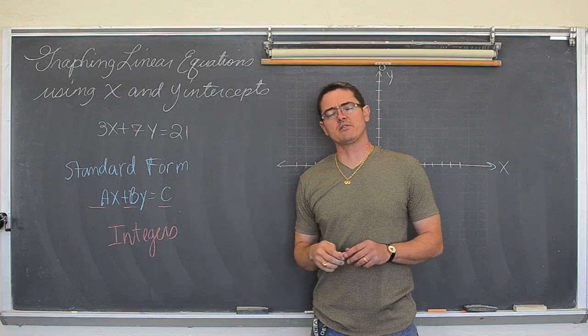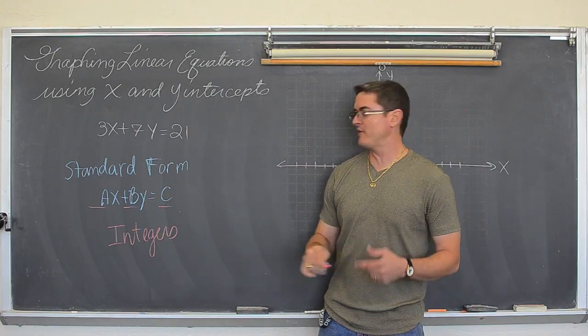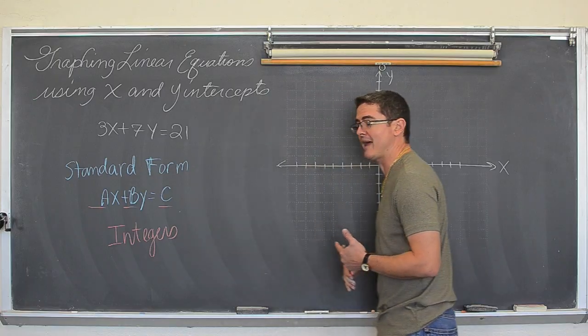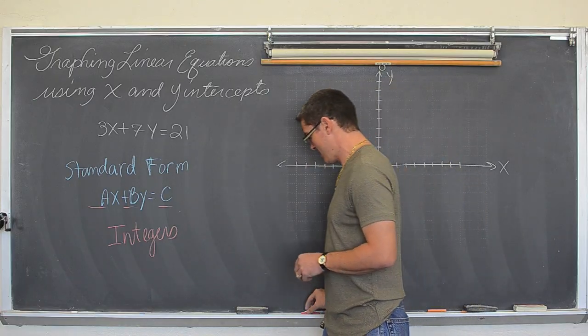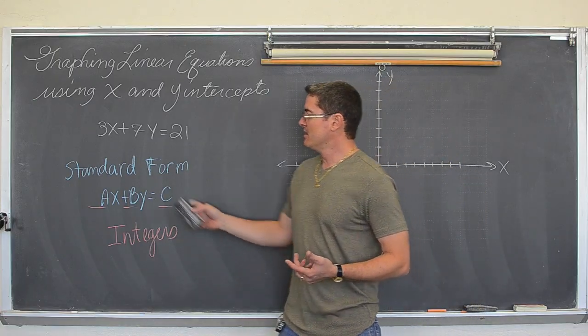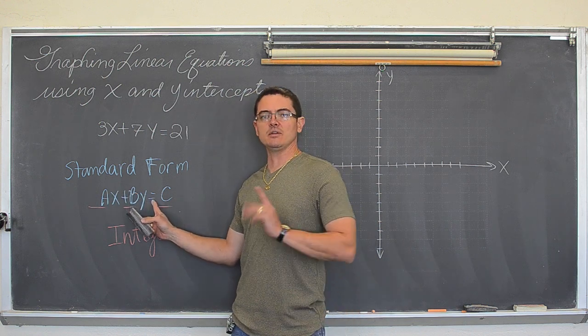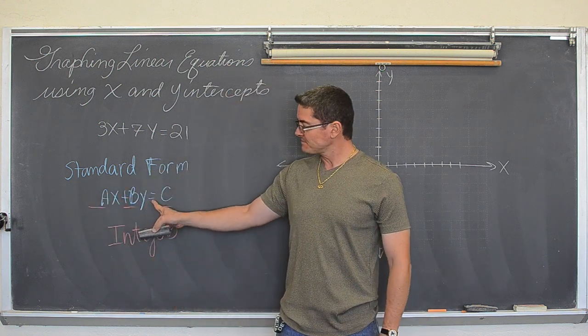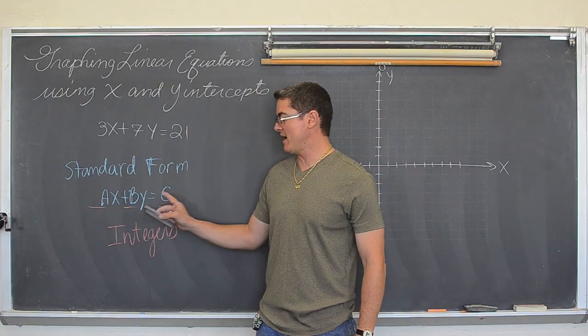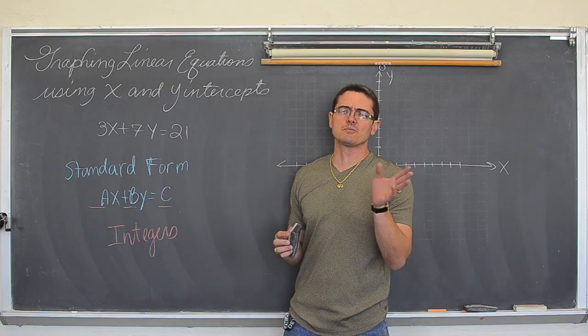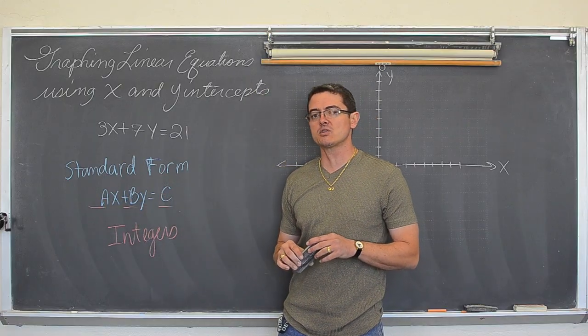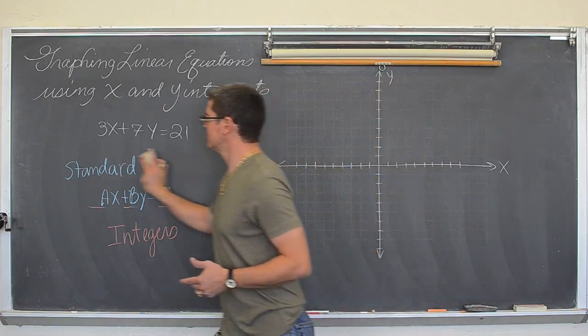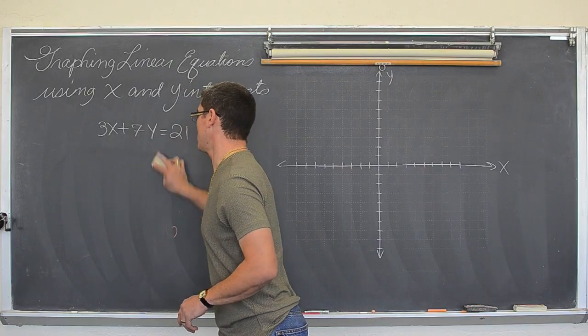And some textbooks will even tell you that the coefficient of x will have to be positive. Most textbooks I have seen have written that in there. The last one I looked at didn't. But standard form is when you have the equation, here is the equal sign, the x and the y's are on the left hand side. And the coefficients that you have in here, almost every textbook I've ever seen will say that those must be integers, no decimals or fractions are allowed. So, here we have an equation in standard form.